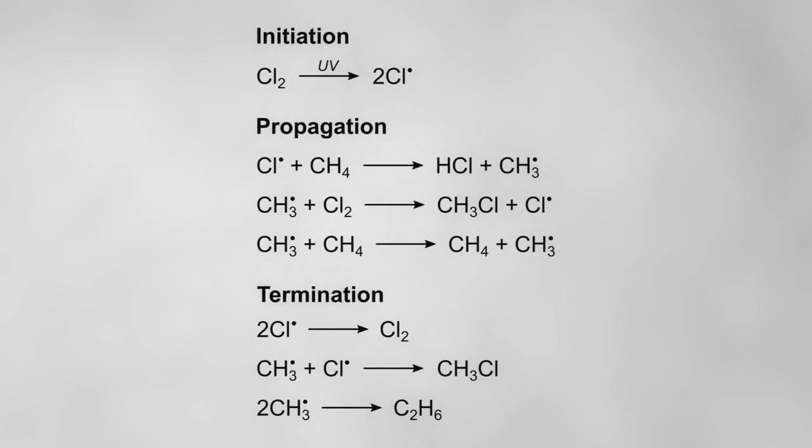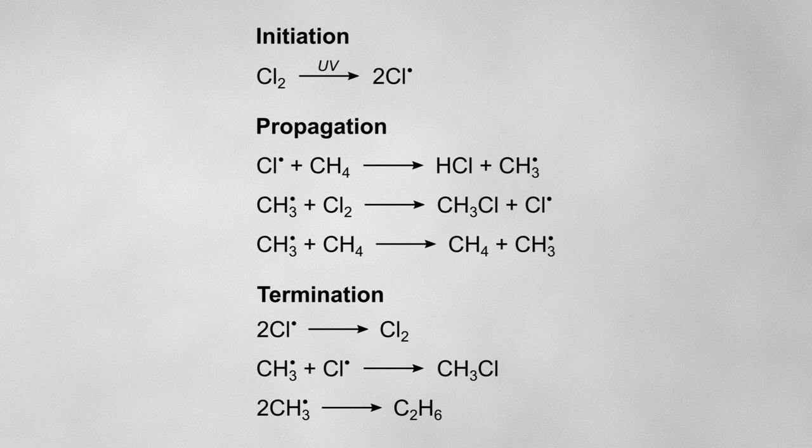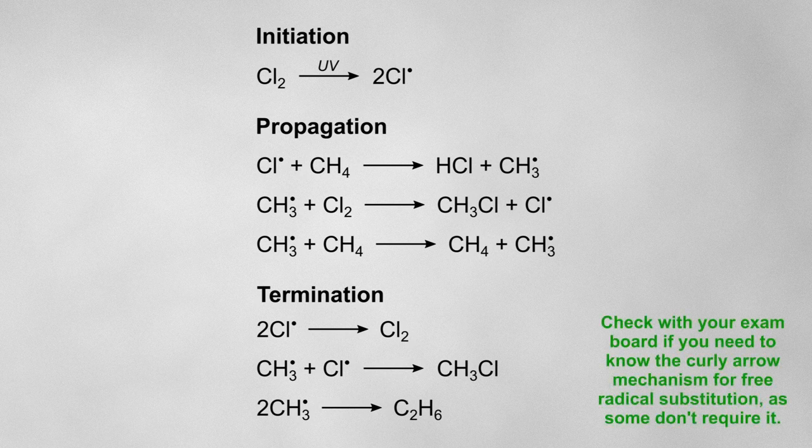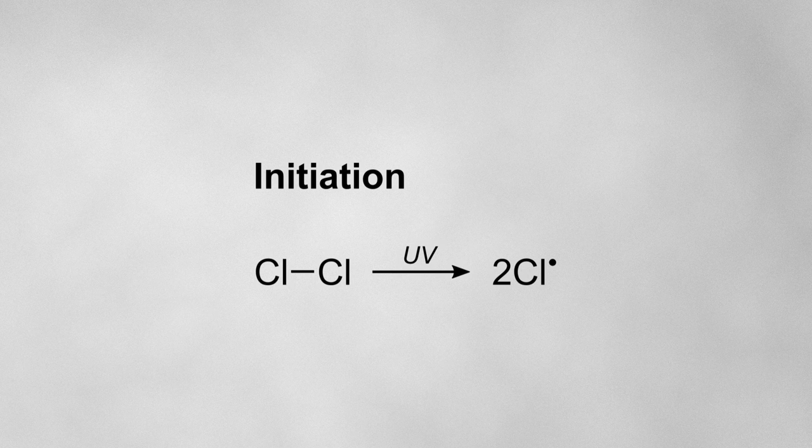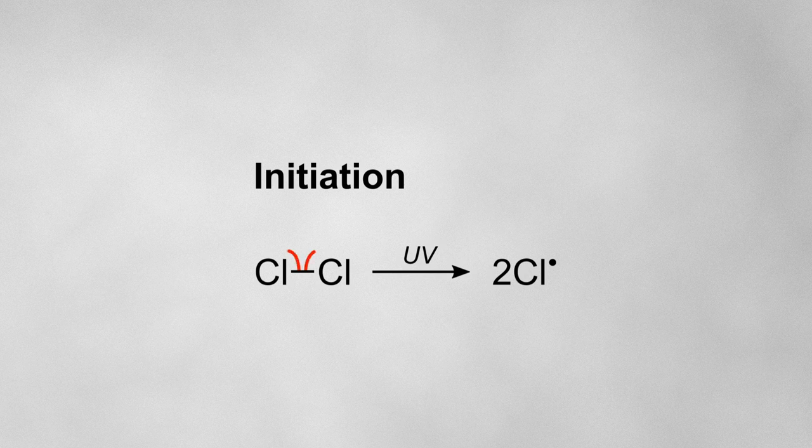We've looked at the three steps involved in the mechanism – initiation, propagation and termination. But what would the curly arrow mechanism look like for free radical substitution? Let's start with the initiation step. The chlorine-chlorine bond is breaking homolytically with one electron going onto each chlorine atom. We show this with two curly half-arrows which each represent the movement of a single electron.